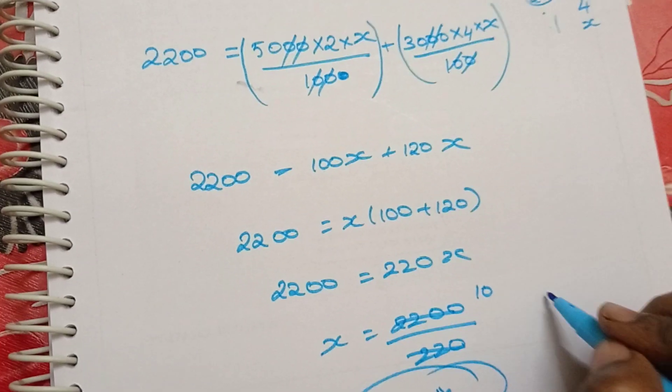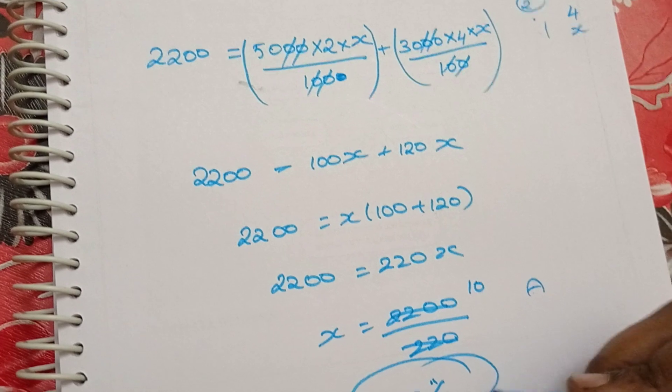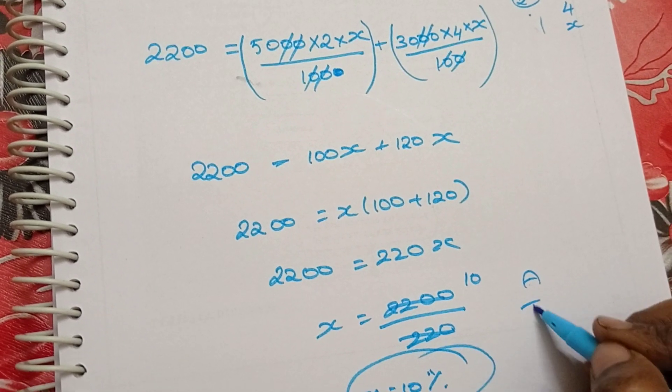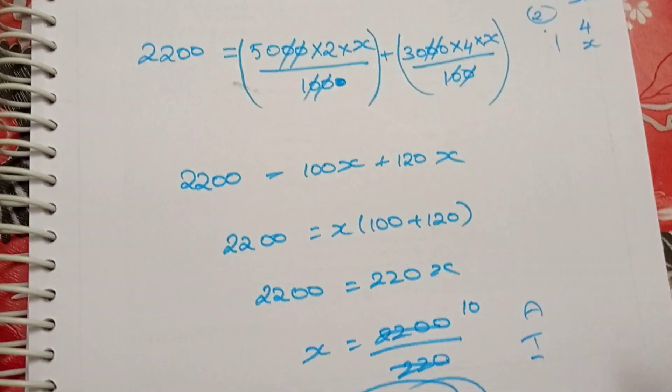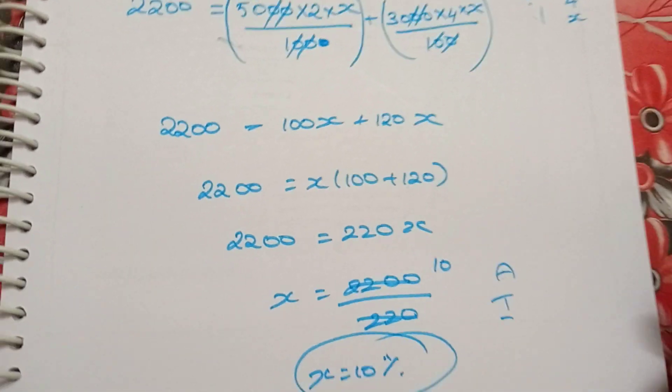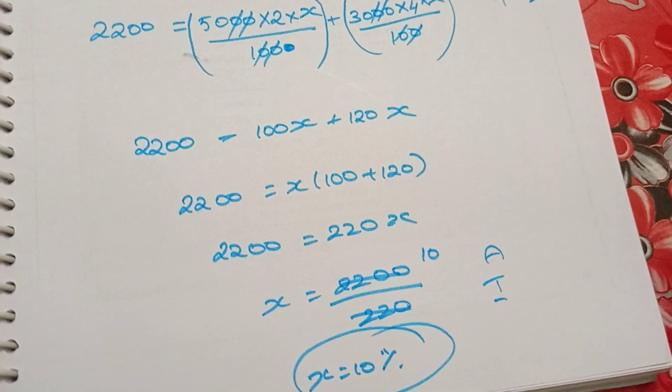The first sum is the amount. This is the interest. So let's try the next sum.